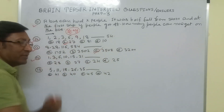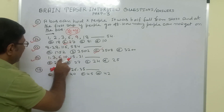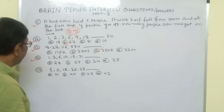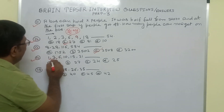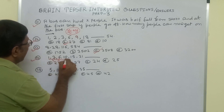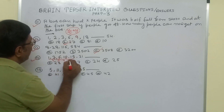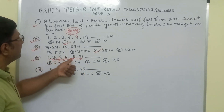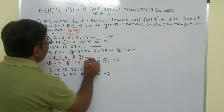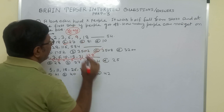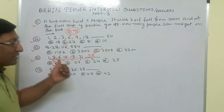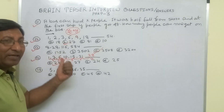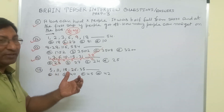The next series question is: 1, 3, 6, 10, 15, 21 — find the next number. The differences between consecutive terms are: 3−1=2, 6−3=3, 10−6=4, 15−10=5, 21−15=6. So the differences are increasing by 1 each time: 2, 3, 4, 5, 6. The next difference will be 7, so 21 + 7 = 28. The correct answer is 28.